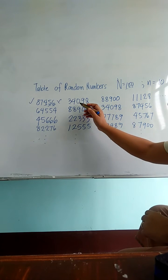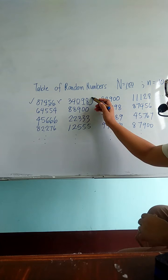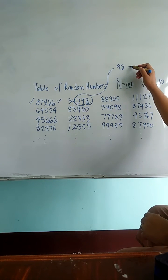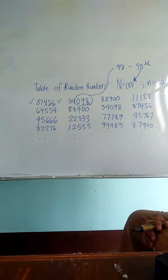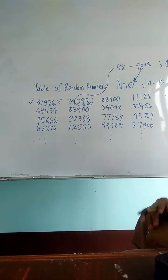And the last 3 digits is 098. So 098, or 98, in your population will be your first sample.